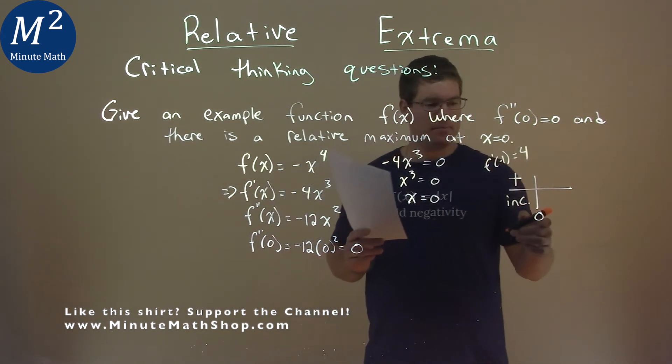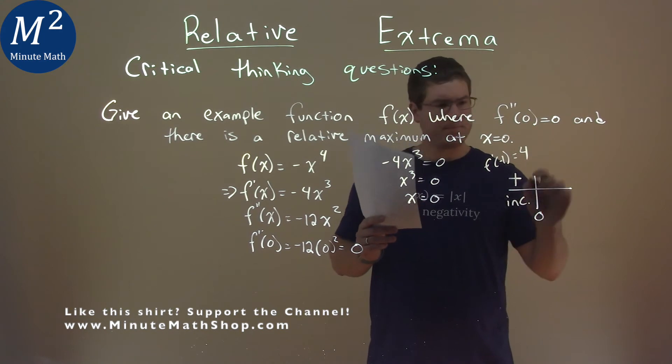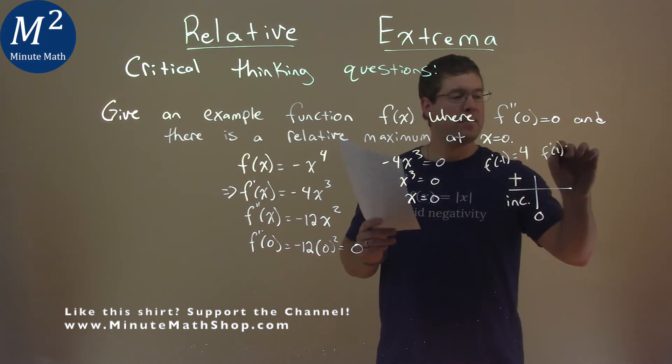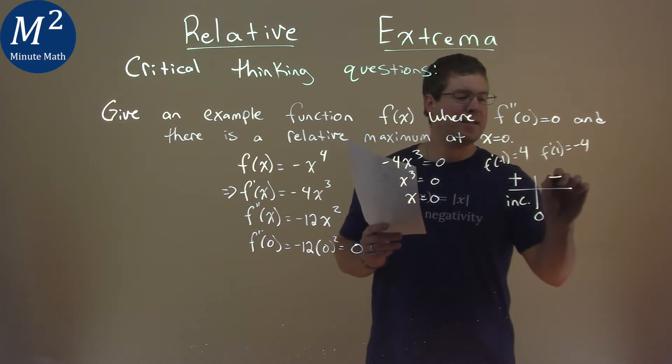I found a value just bigger than zero, which was 1, so f'(1), and that comes out to be -4. It's negative, and that means we are decreasing.